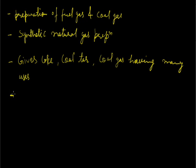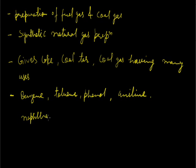Coal is a source of many important organic compounds. Examples are benzene, toluene, phenol, aniline, naphthalene, anthracene, etc.